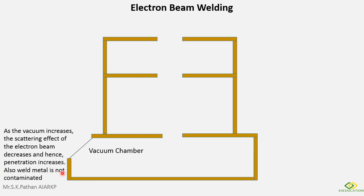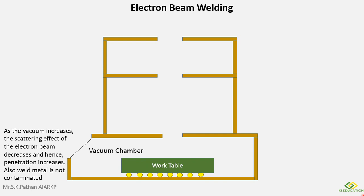The weld metal is not contaminated. In conventional processes we use fluxes, brazing, soldering, shielding gas in gas welding, or inert gases in TIG welding to protect the weld from contamination. Here, we use a vacuum to reduce contamination. Inside the vacuum chamber there is a roller, on which a working table is placed with the workpiece, and a viewing section is provided to monitor the welding process.